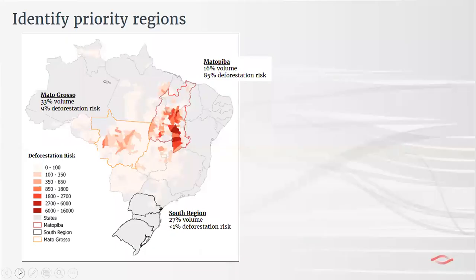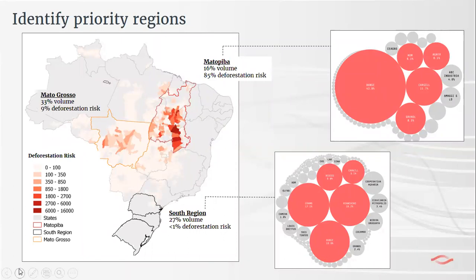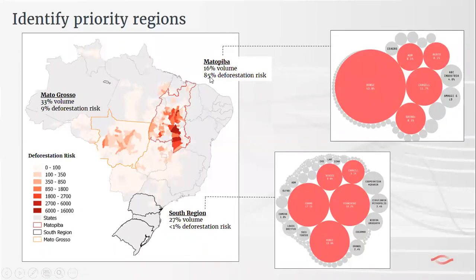As a quick example of TRACE's power to identify priority regions: looking at sourcing regions for soy imports to the EU from 2013 to 2017, although the Matopiba region highlighted in red only provides 16% of the volume of soy imports to the EU, it represents 85% of the deforestation risk for EU imports. This immediately shows an area where the EU can prioritize to reduce its risk exposure.